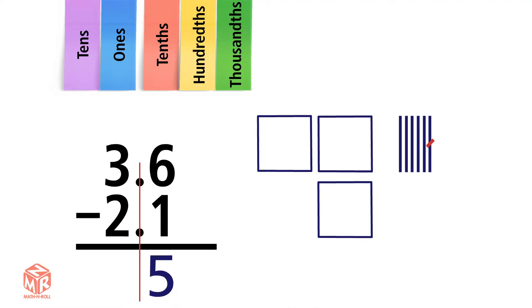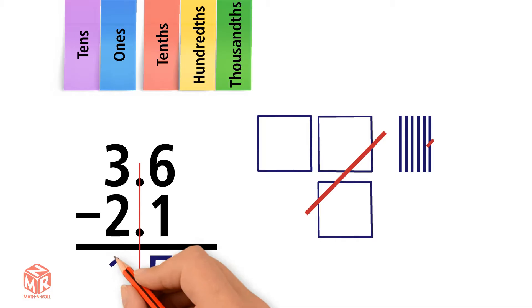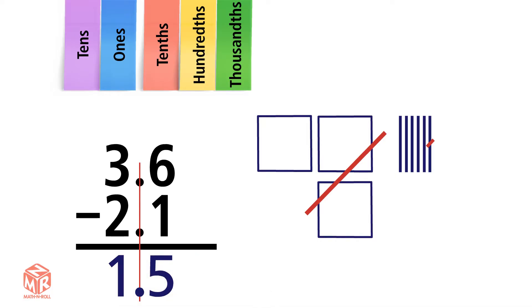Now we bring down the decimal point. Next, we subtract the ones. 3 minus 2 equals 1, so we write that in the ones column. The answer is 1.5.